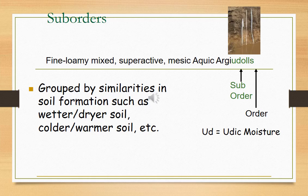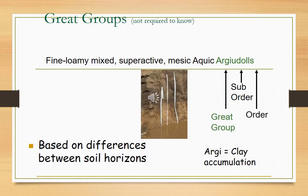Suborders are differentiated based on differences in soil moisture, soil temperature, and the dominating influence of physical and chemical characteristics. 60 suborders have been identified.